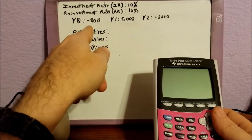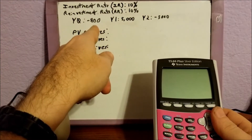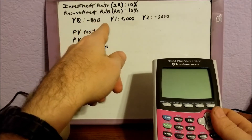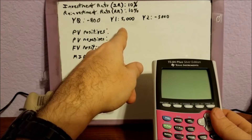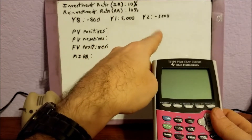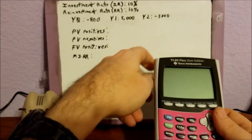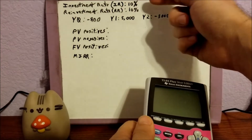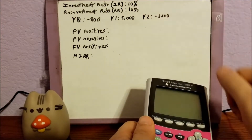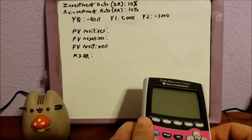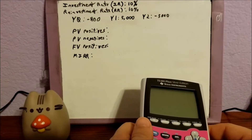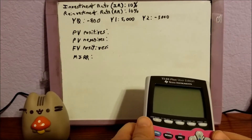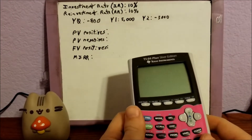For year zero, we have an initial cash outflow of $800 — that's our initial investment. Year one, we get a cash flow of $5,000, and then year two, we make a reinvestment of $5,000. Our investment rate is going to be 10%, and our reinvestment rate is also 10%, although later in the video I'll show you how to adjust if the reinvestment rate is different.